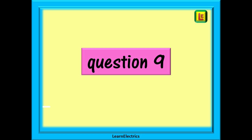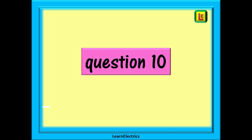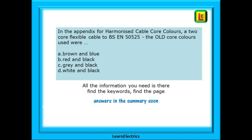Question 9 is unaided and is there for you to attempt without help. Here is the question along with the four possible answers A, B, C, or D. Pause the video while you look for the answer. The more that you attempt these questions, the more that you will learn. Look for the keywords, be methodical, and find the answer. The answer will be given after question 10. And question 10 is also unaided — the question is full of keywords and clues to the answer. Pause the video and attempt an answer. All the information you need is there. The more you attempt to find the answer yourself, the easier the actual exam will be.